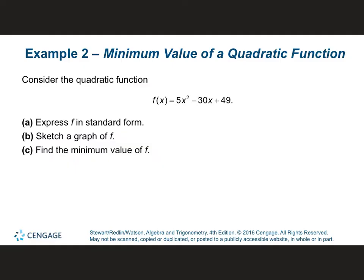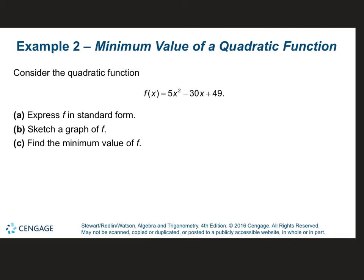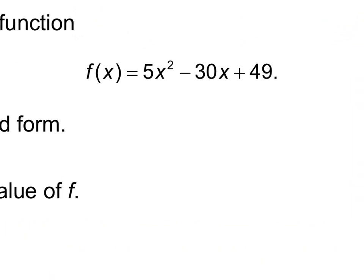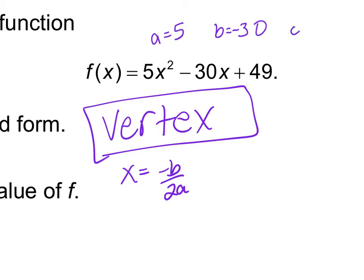Let's go through another example and just find the vertex. The formula is x equals negative b over 2a. What is my a term? 5. What is my b term? Negative 30. What is my c term? 49. The domain for every quadratic is negative infinity to positive infinity. The y-intercept is at 49. This parabola opens upward, so it has a minimum.